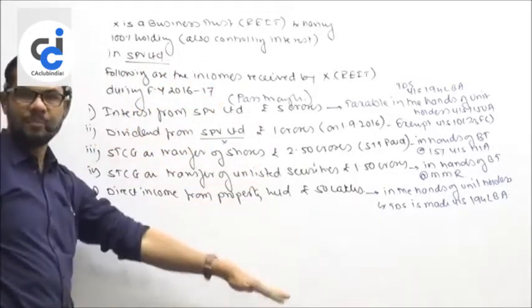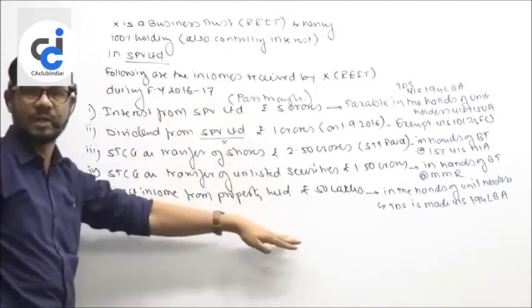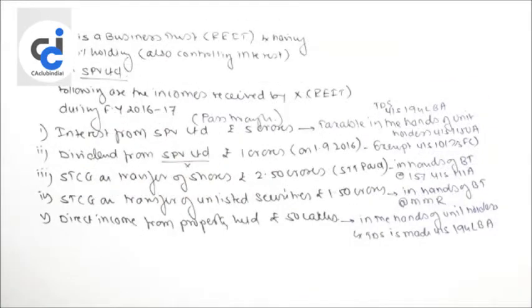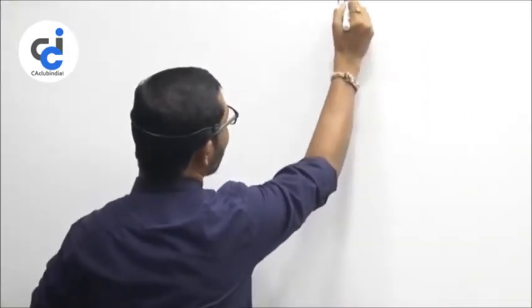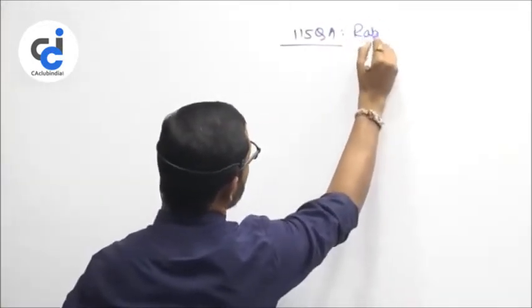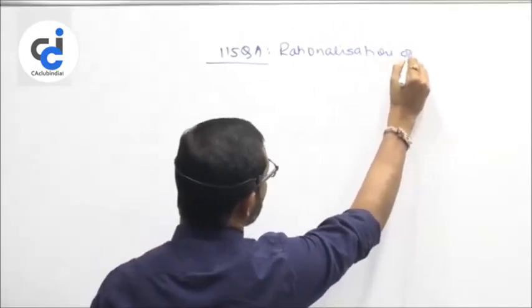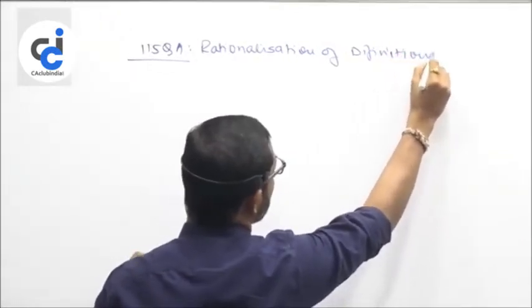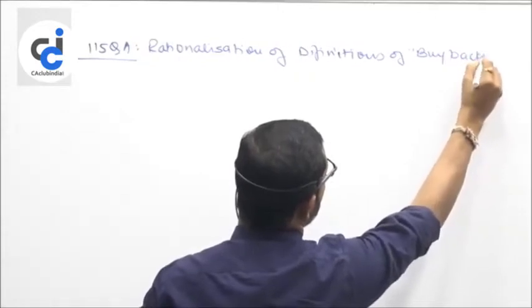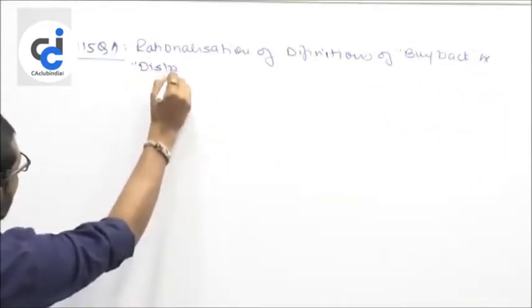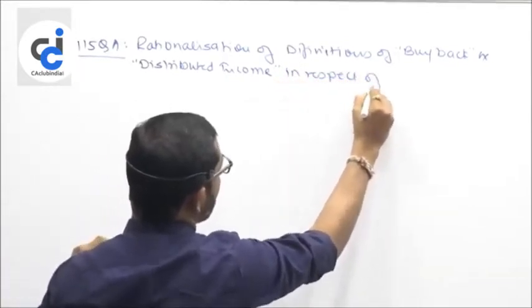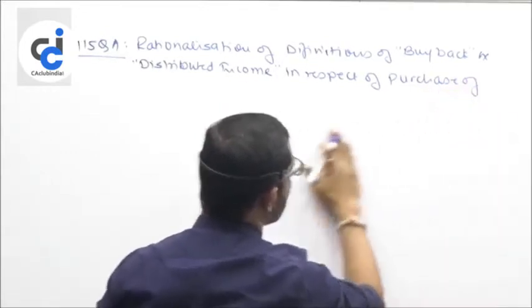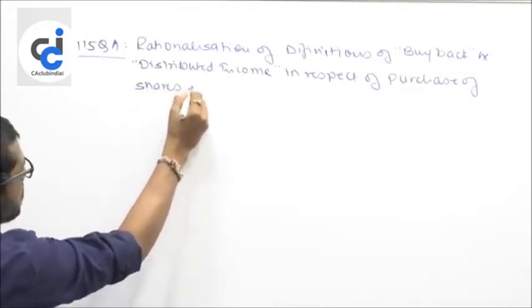So take this example — now your understanding of how business trust taxation takes place will be fully clarified. Now let us come to the clarificatory amendment under section 115QA — that is rationalization of definitions of buyback and distributed income in respect of purchase of shares by a company.